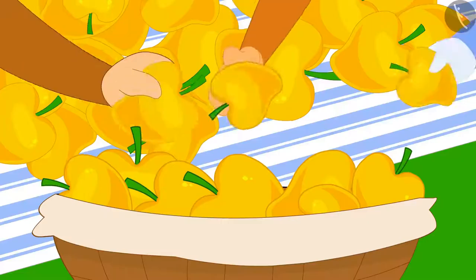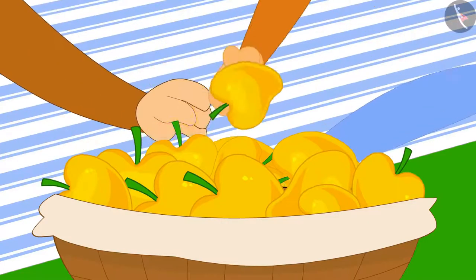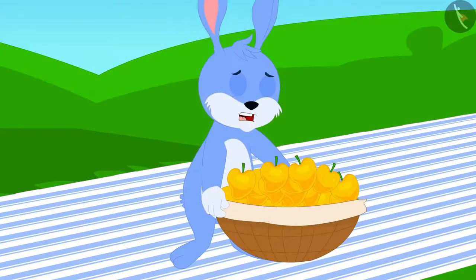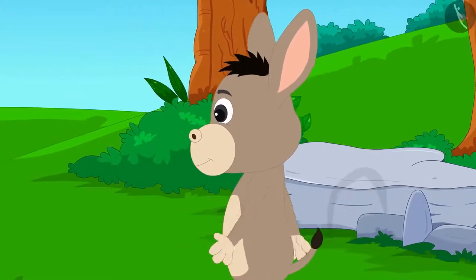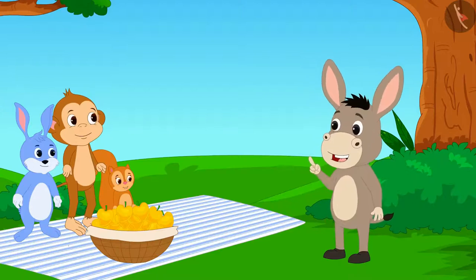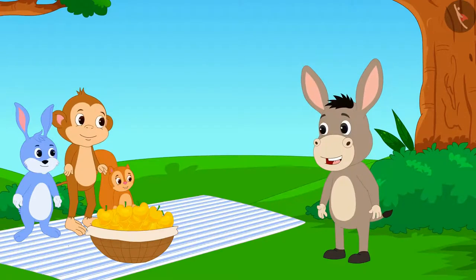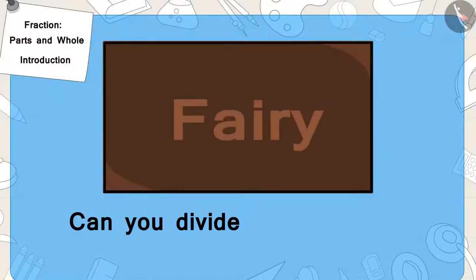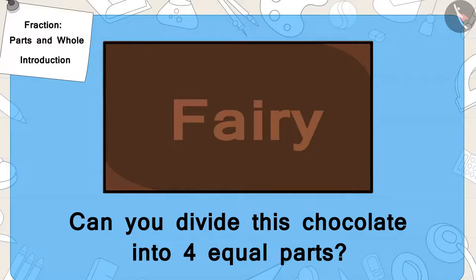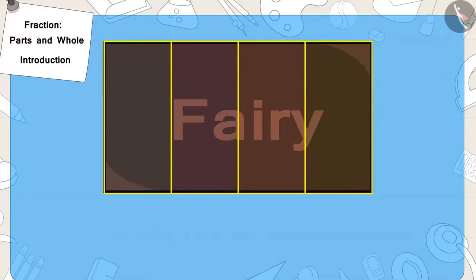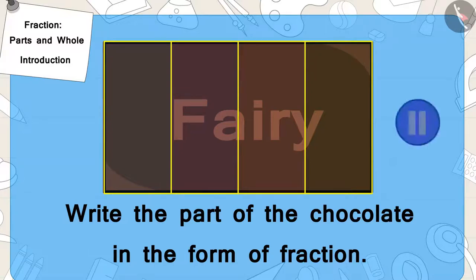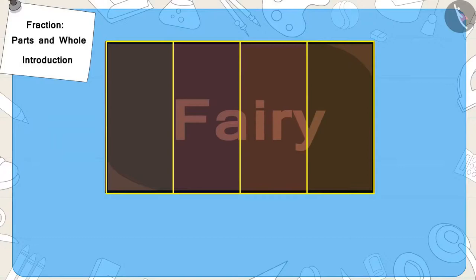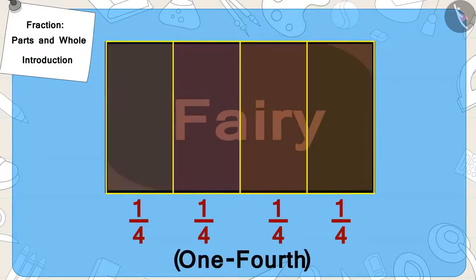Chanda also agreed and filled all the mangoes in the basket. But when they tried to lift the basket, it was too heavy and none of them were able to lift it. Just then, Bholla the donkey was passing by. Once again, Bholla also decided to help and in return, he too asked for an equal share of chocolate for himself. Now, can you divide this chocolate into four equal parts? Write the part of the chocolate received by each one of them as a fraction. If you wish to, you may stop the video and find the answer. Well done, children. You have found the correct answer. We also call one by four as one-fourth.